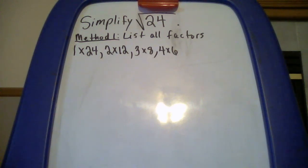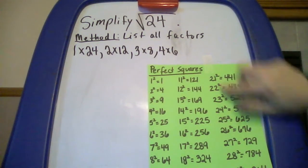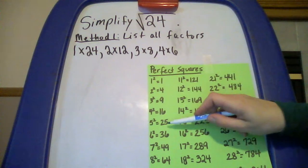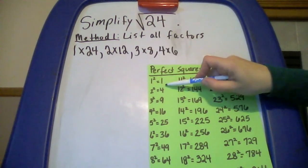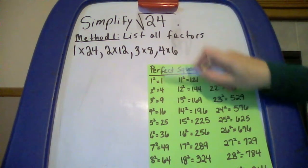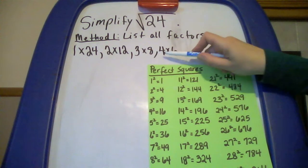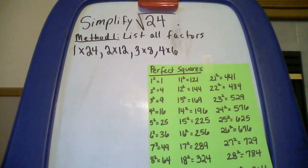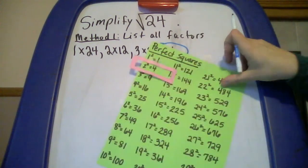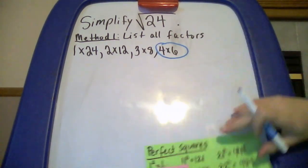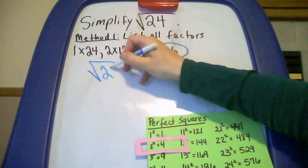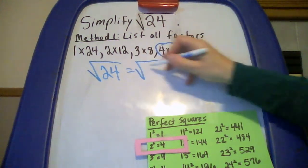Now we're going to think about which of those numbers is a perfect square. Going down the list: 24 is not a perfect square, 2 is not a perfect square, 12 is not a perfect square, 3 is not a perfect square, 8 is not a perfect square. But 4 is a perfect square, so we're going to use 4. I'm going to circle this factor pair. Now we're going to rewrite the square root of 24 using the factor pair: 24 is 4 times 6.